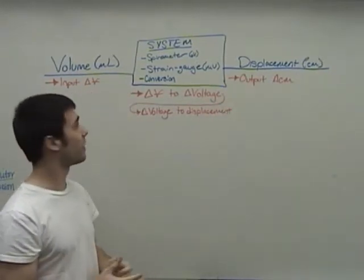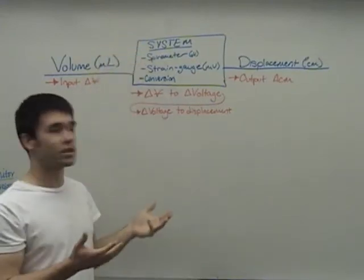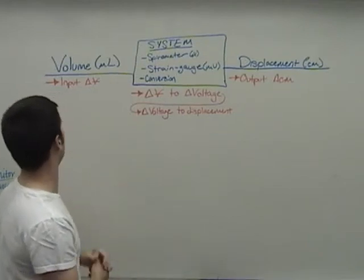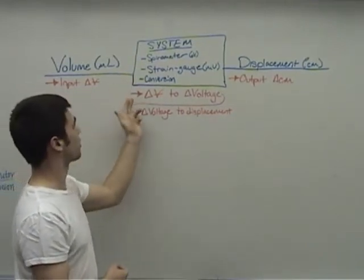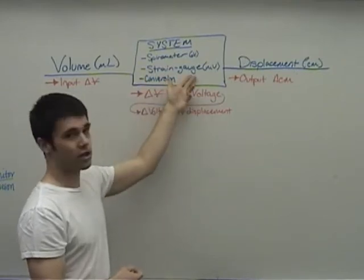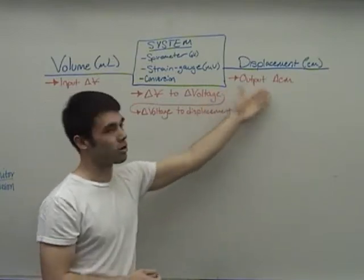So we want to identify the system that we have. We're going to have a spirometer, a strain gauge, and obviously some kind of conversion factor. So based on the input change in volume, that's going to correspond to a change in voltage from our strain gauge, and this change in voltage is going to correspond with a change in displacement, which will be our output.